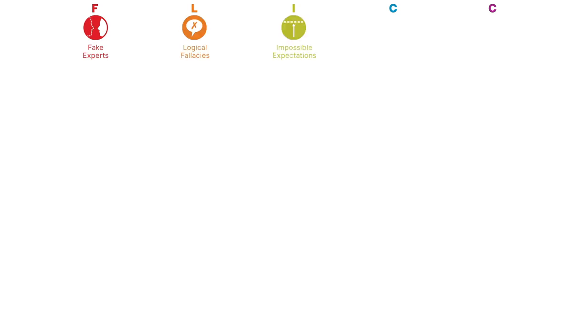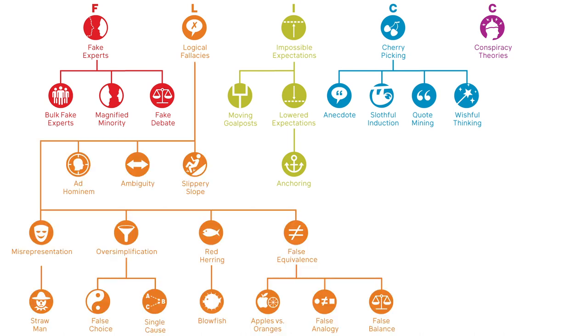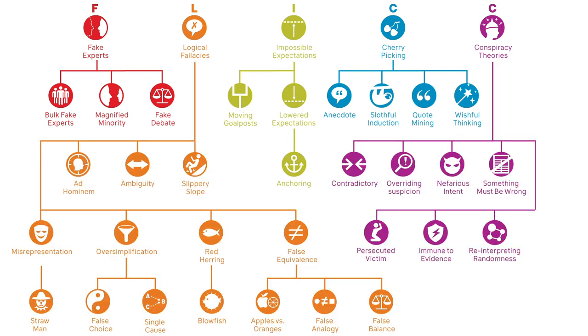A useful framework to help you identify and explain fallacies in misinformation is the five techniques of science denial, summarized with the acronym FLICC: Fake experts, Logical fallacies, Impossible expectations, Cherry picking, and Conspiracy theories. The FLICC taxonomy is a large, detailed landscape of rhetorical techniques, logical fallacies, and traits of conspiratorial thinking. Going into those techniques in detail is a topic for a whole other video.